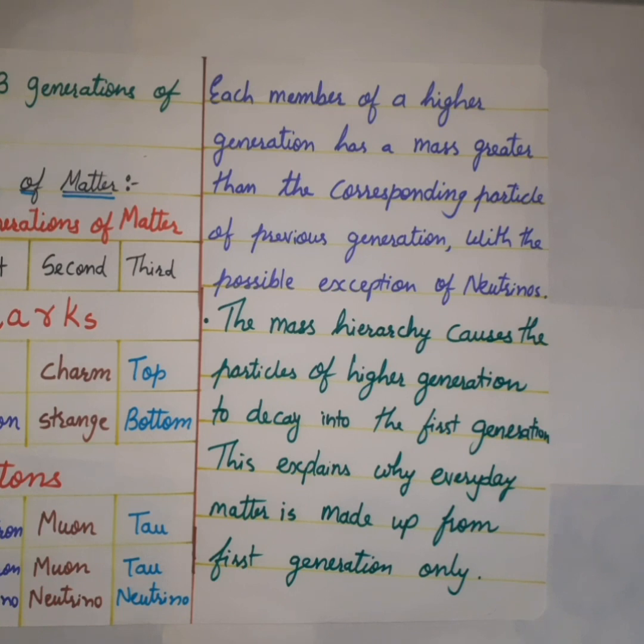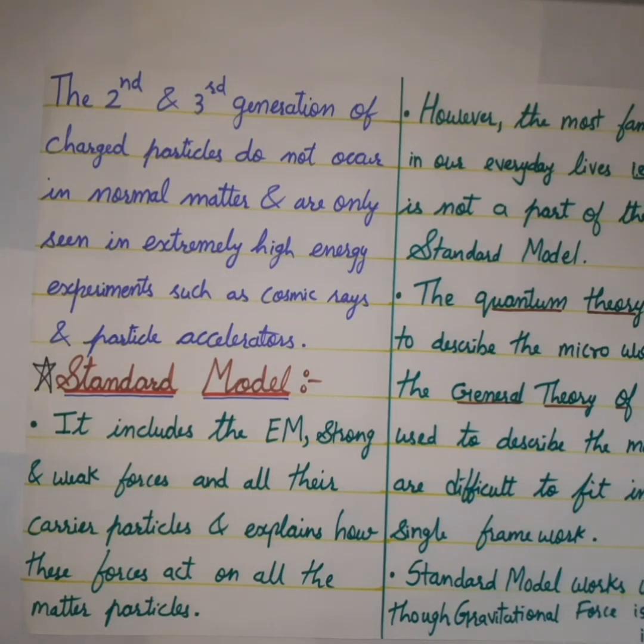The electrons surround the nucleus, and the nucleus is made up of protons and neutrons which contain up and down quarks. Here, electrons, up and down quarks are the first generation particles. The second and third generation of charged particles do not occur in normal matter and they are only seen in extremely high energy experiments such as cosmic rays and particle accelerators.